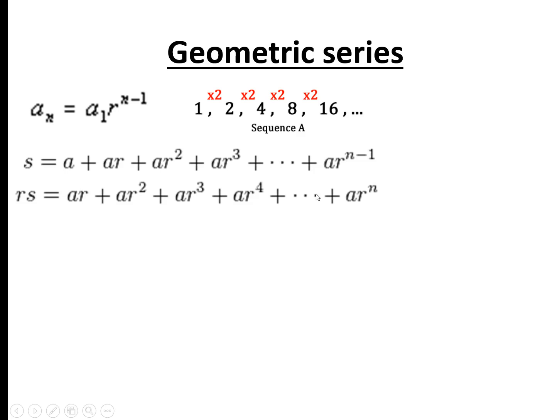So each term is individually times by r. And then if we do s minus rs, so this sum minus this sum here, then these two terms will cancel out, these two terms will cancel out, and that carries on. And then what you're just left with is, all of these terms here will cancel out in this section, and what you're just left with is a minus ar to the power of n, because obviously you're subtracting this. That means you've got, if you take out a factor of s from this side, then you've got s times 1 minus r equals a times 1 minus r to the n, and that means the sum is just given by this equation.